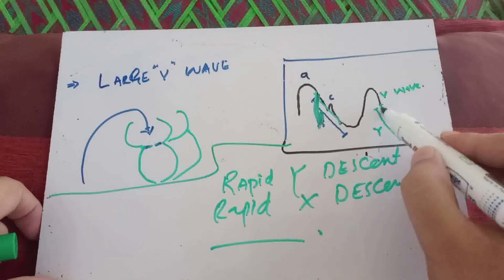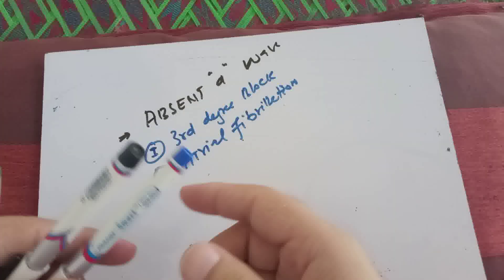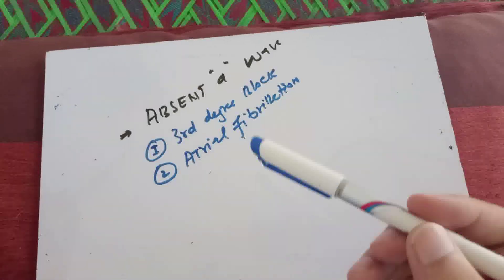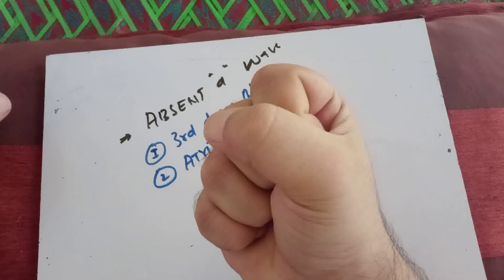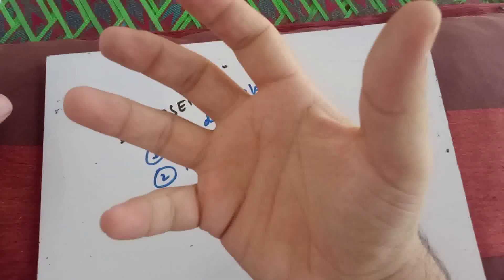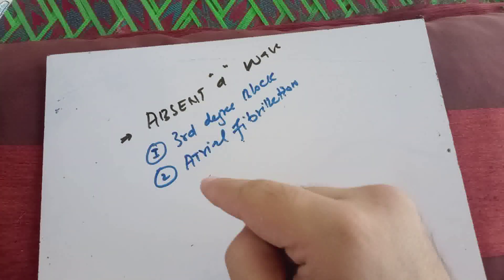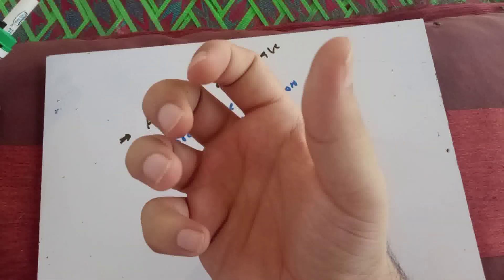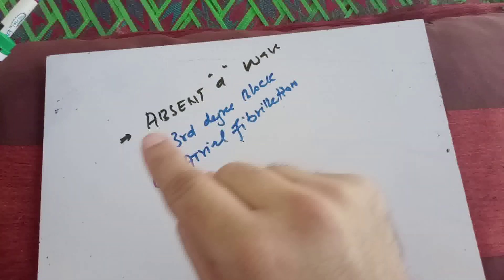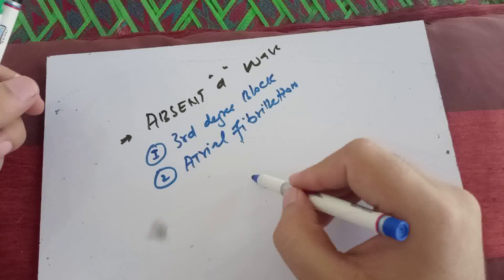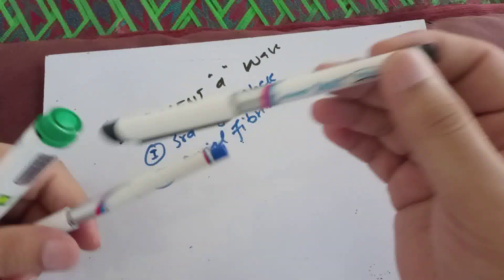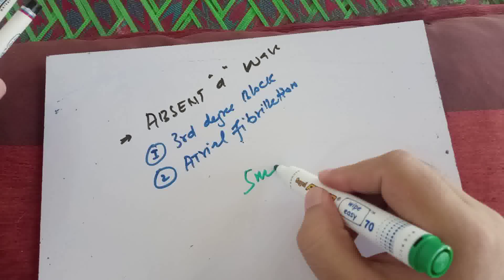There is another MCQ — absent A wave. The A wave is produced due to right atrial contraction, as we already discussed. If the right atrium is not contracting, there will be no A wave. The condition in which there is no atrial contraction is atrial fibrillation. In atrial fibrillation, the atria is having fibrillatory activity but it is not contracting. So if it is not contracting, there will be no A wave — absent A wave occurs in atrial fibrillation.